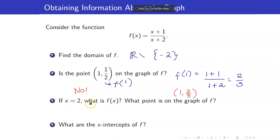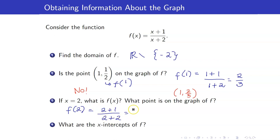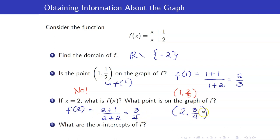Next, if x equals 2, what is f(x)? It's just a matter of substituting. We want f(2), which is (2 + 1) over (2 + 2), so that's 3/4. What point is on the graph of f? Your x-coordinate is 2, and the y-coordinate is the image, which is 3/4.